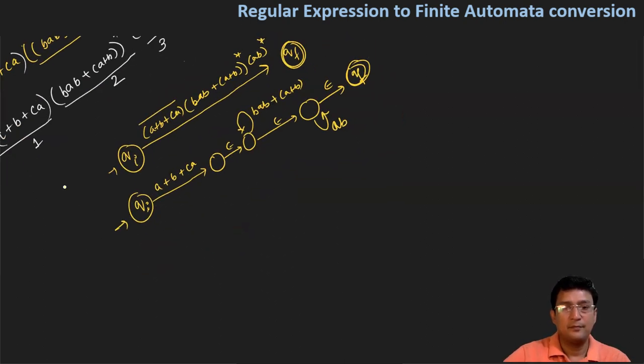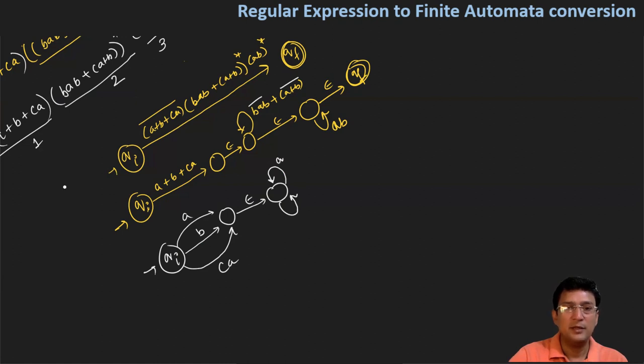From the initial state, we create epsilon transitions. For the closure (a+b)*, we create a state with a self-loop. Then epsilon transition to the next component. For (ab)*, we add states with appropriate transitions, and finally epsilon transition to the final state.